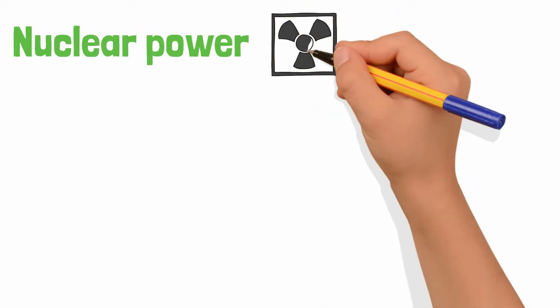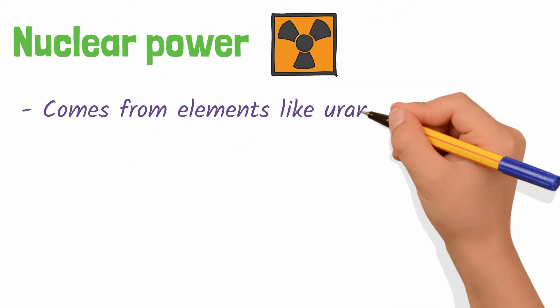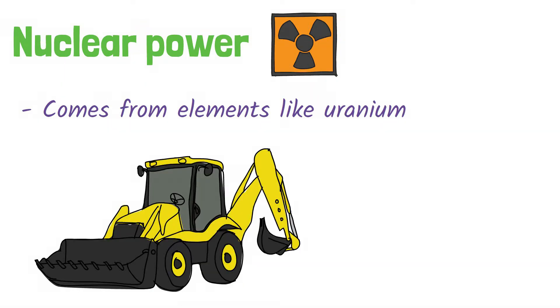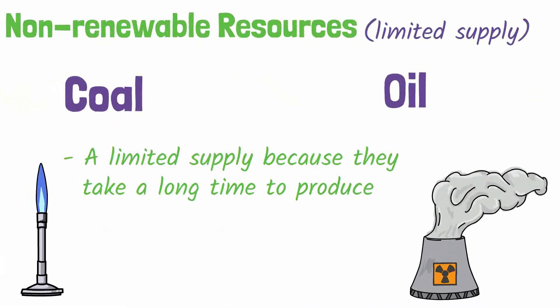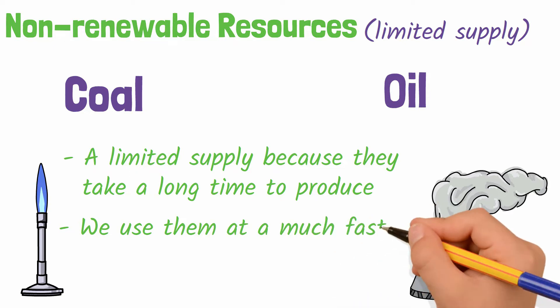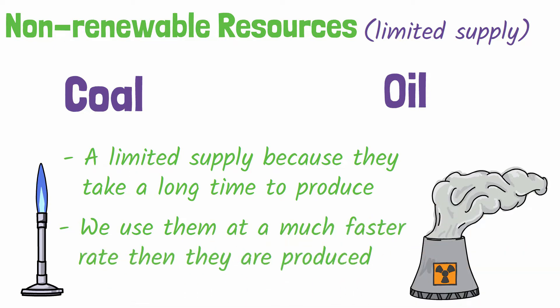Nuclear power, on the other hand, comes from elements like uranium that are mined from the Earth. Again, there is a limited supply of all of these non-renewable resources, because we use them at a much faster rate than they are produced.